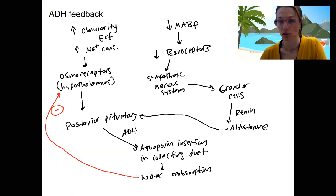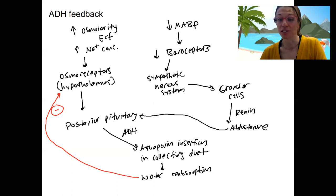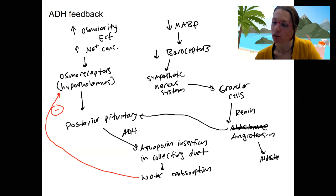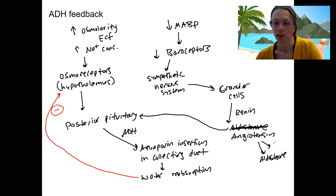Aldosterone triggers the release of ADH from the posterior pituitary — one of the four effects of aldosterone. Angiotensin is also going to result in vasoconstriction, increased thirst, and — through the renin-angiotensin-aldosterone system — it is also going to cause aldosterone to result in sodium reabsorption in the distal convoluted tubule, vasoconstriction, and increased thirst at the hypothalamus.